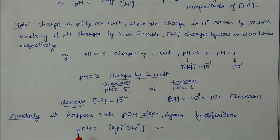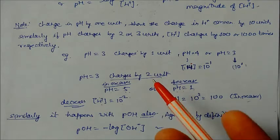By definition, we can write pOH = -log[OH-], the hydroxyl ion concentration. We can do in the same manner.